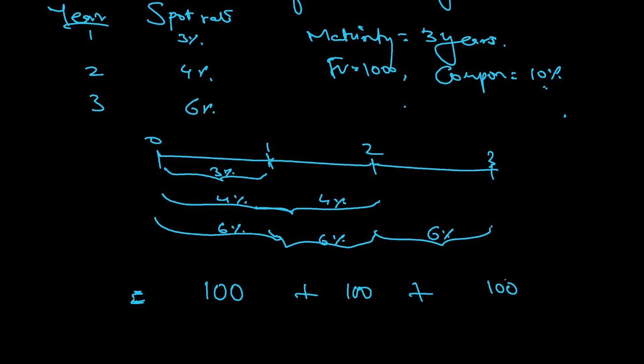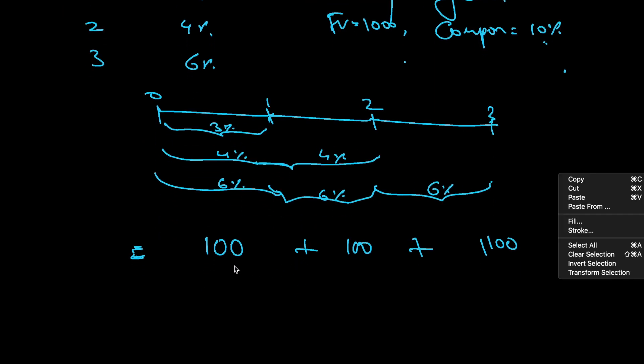Then 100 for third year, plus I will get the maturity amount, that principal amount back, which is 1000. So it will become 1100. Now I have to find out the present value of all these amounts.